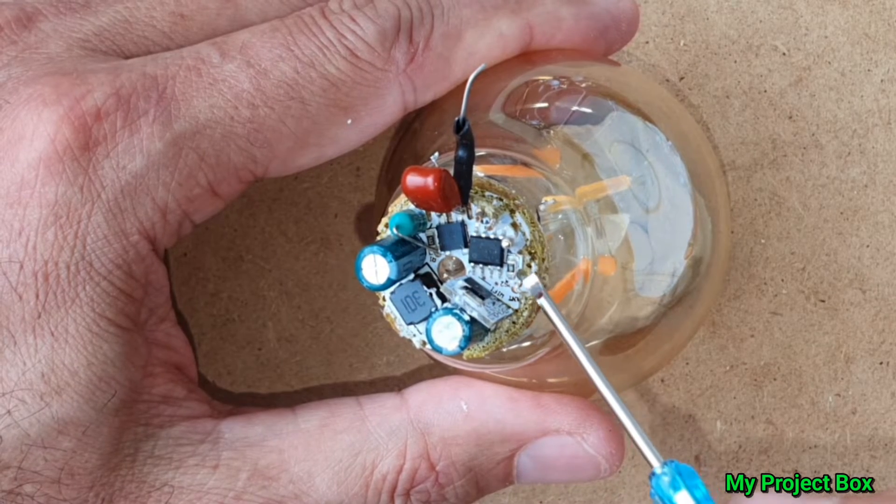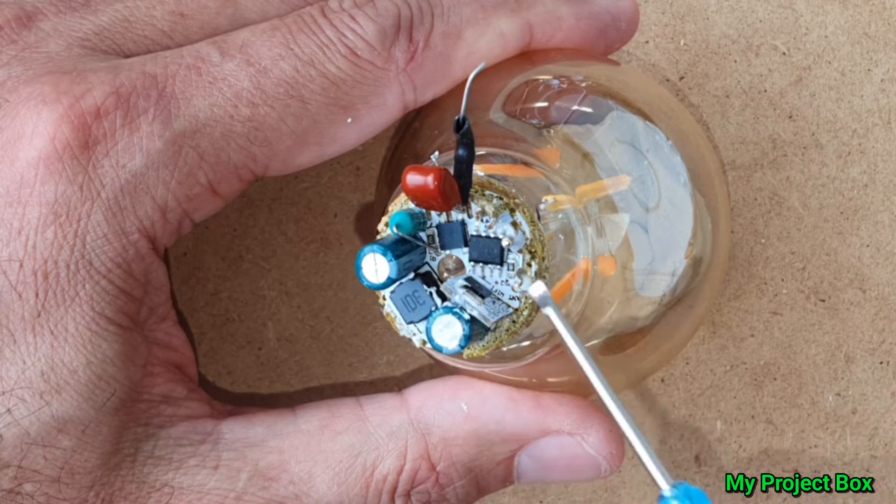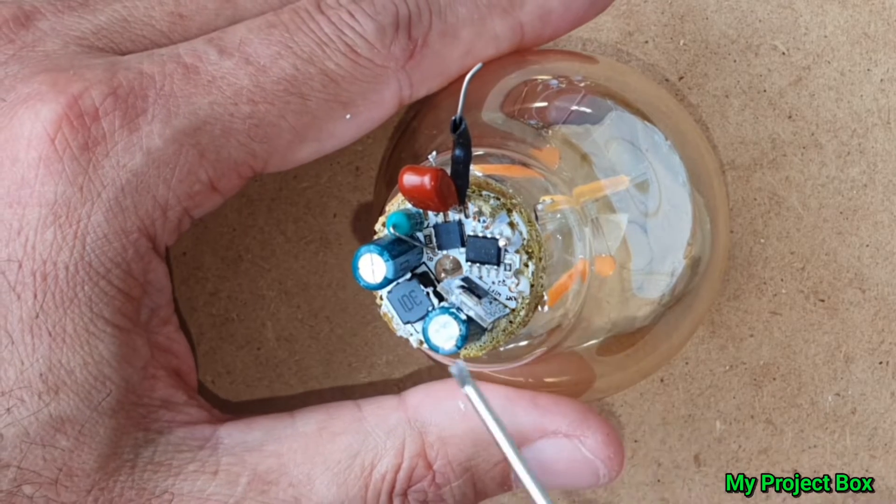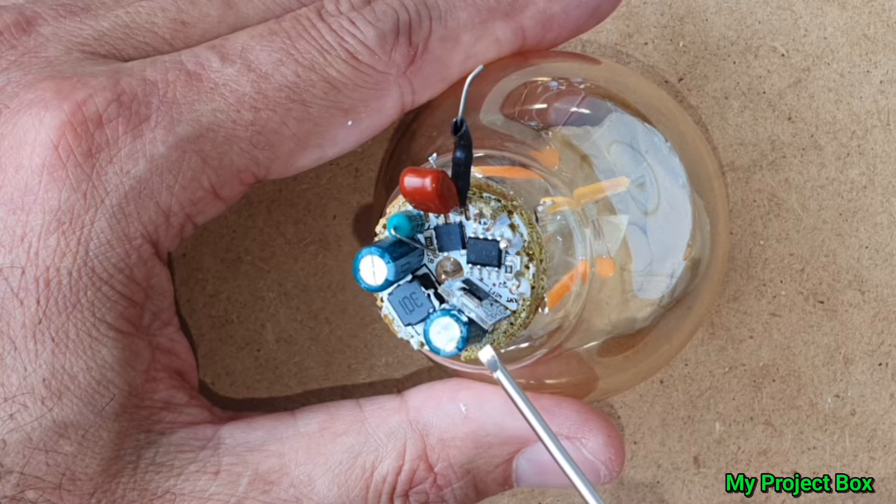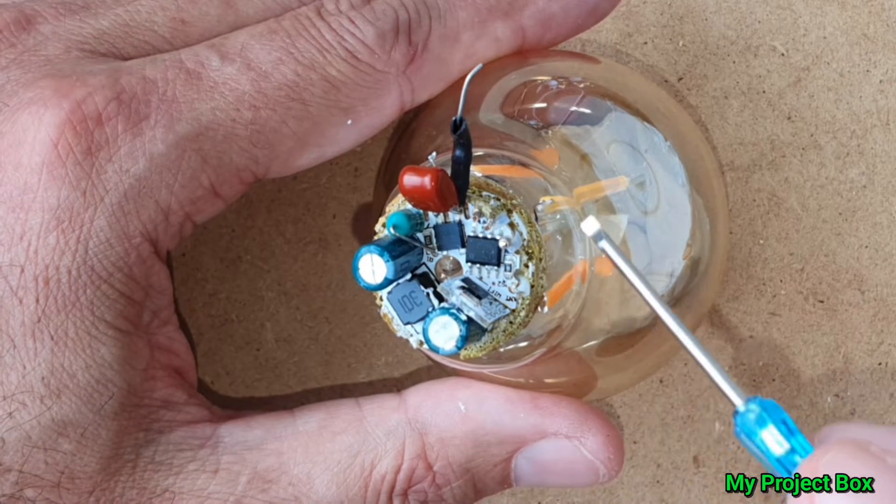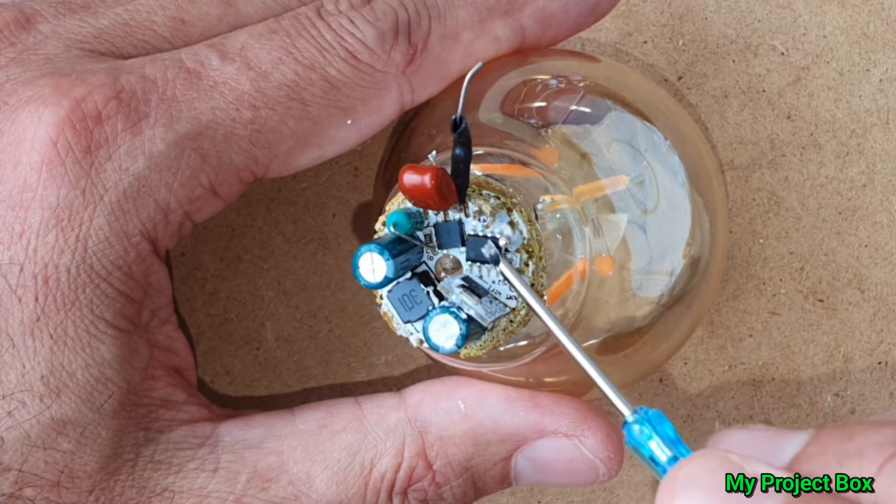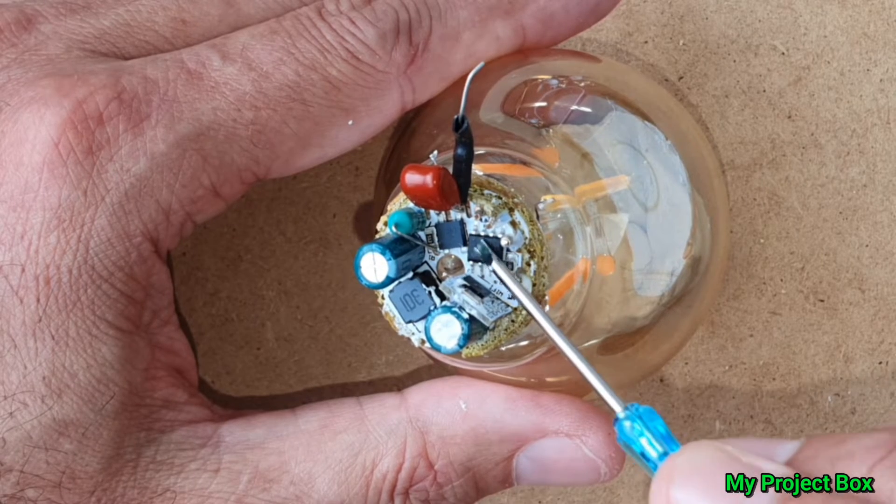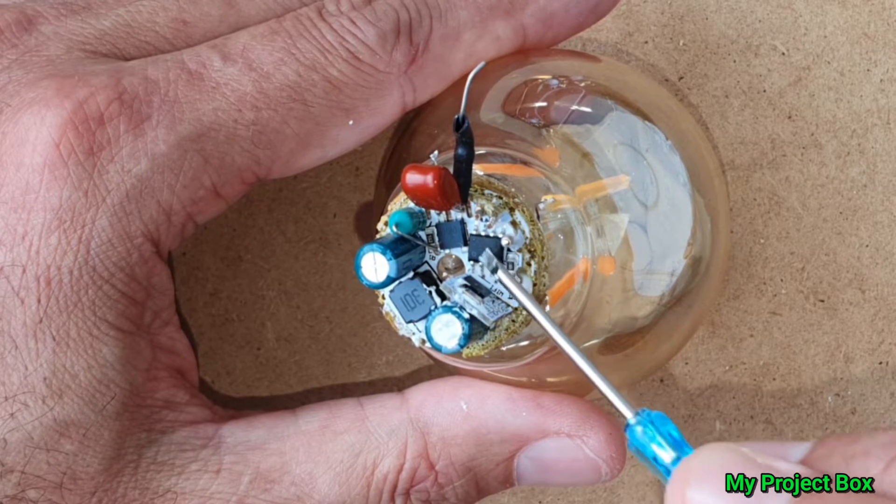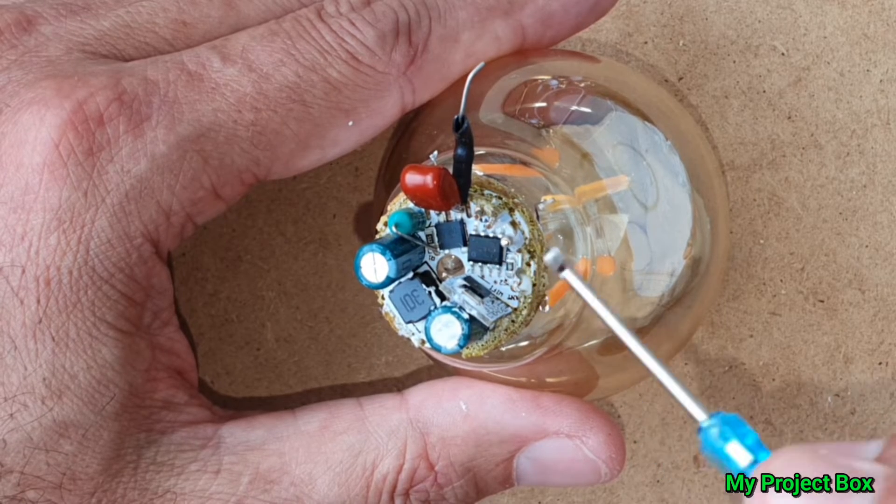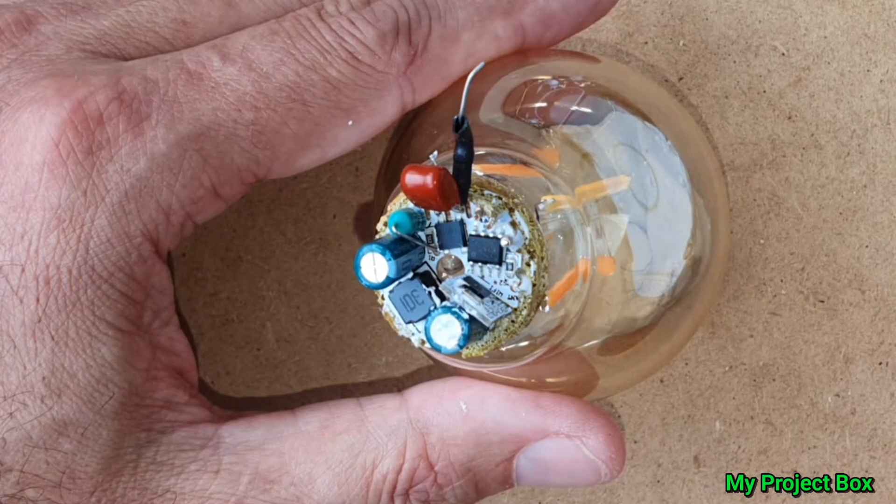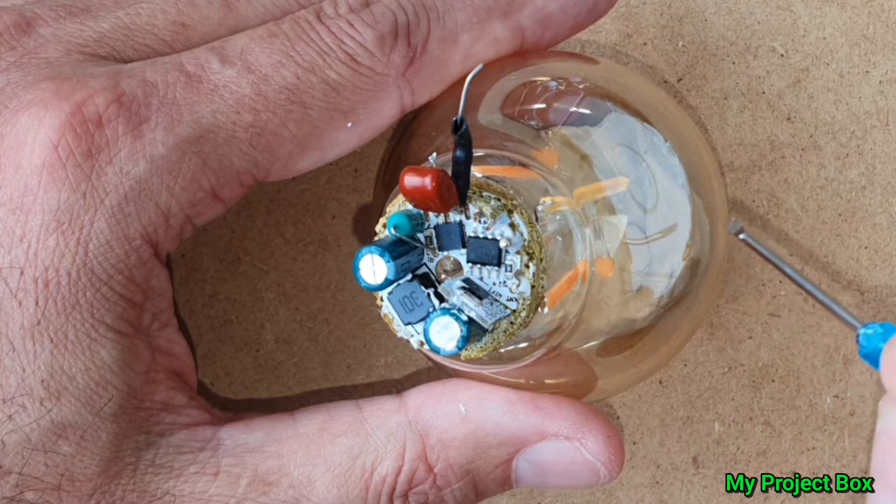But yeah, I mean, it's incredible. All of this fits in that tiny little screw cap. I don't know how they manage that. But yeah, so this takes a PWM signal from this little module here and then controls the two channels for the warm white and cold white LED filaments.